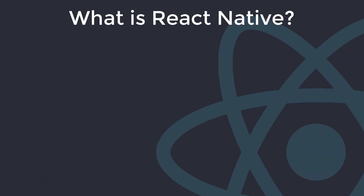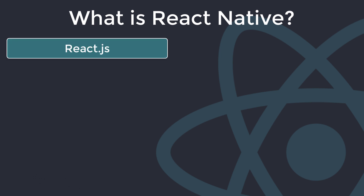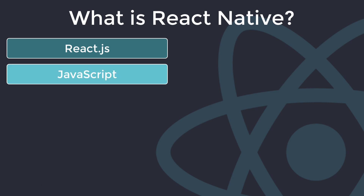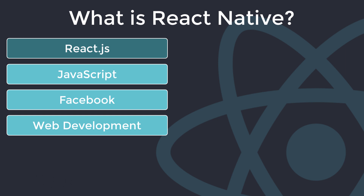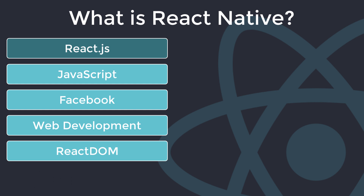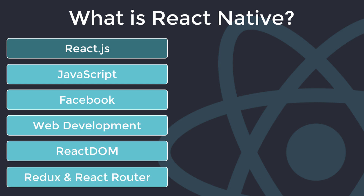What is React Native? Let's start with the React part. React, also known as React.js, is an open-source front-end JavaScript library for building user interfaces or UI components. It is maintained by Facebook and a community of individual developers and companies. We use React in web development for building web apps. React is only concerned with rendering data to the DOM, and so creating React applications usually requires the use of additional libraries for state management and routing. Redux and React Router are respective examples of such libraries.